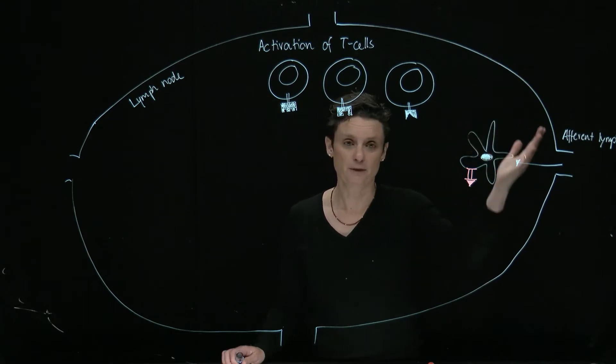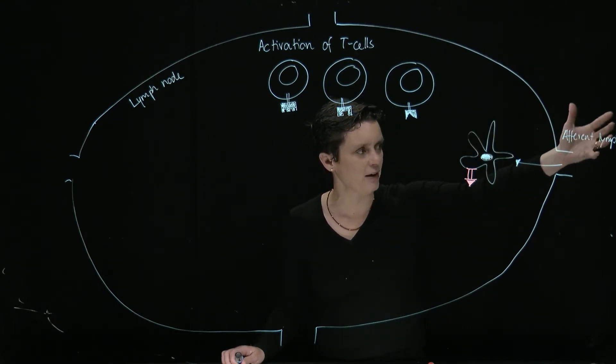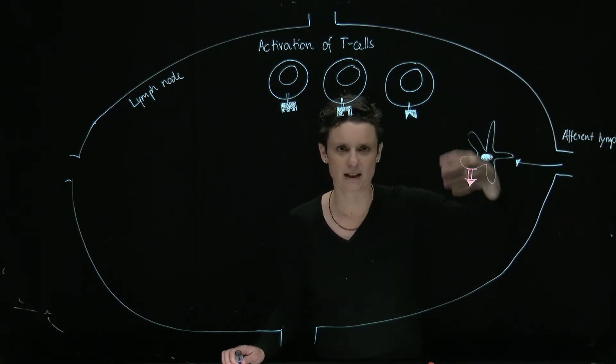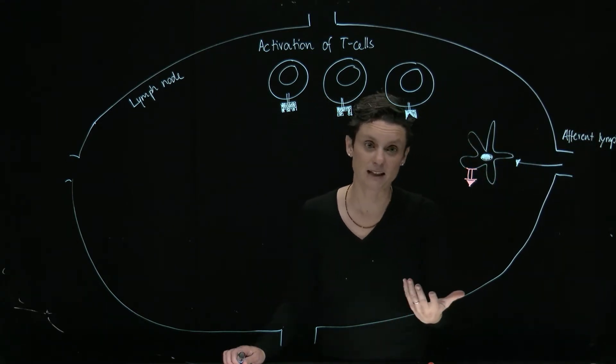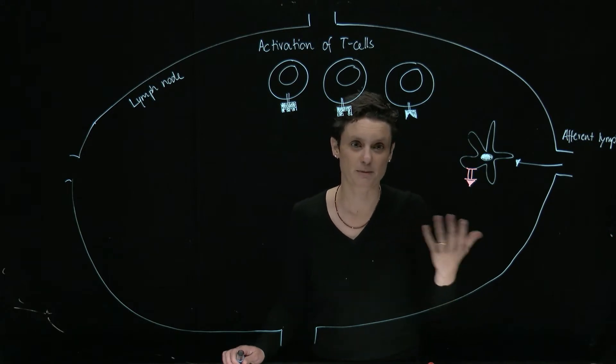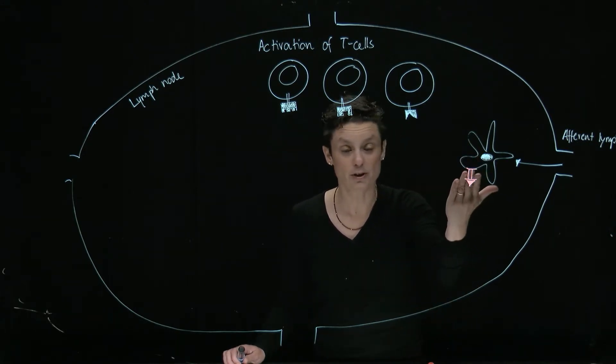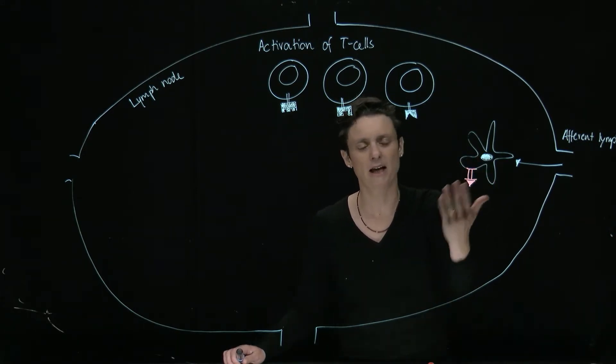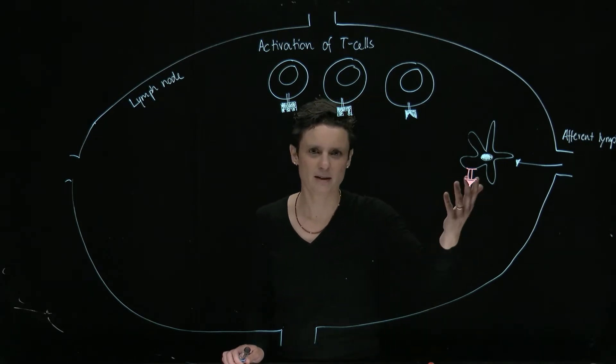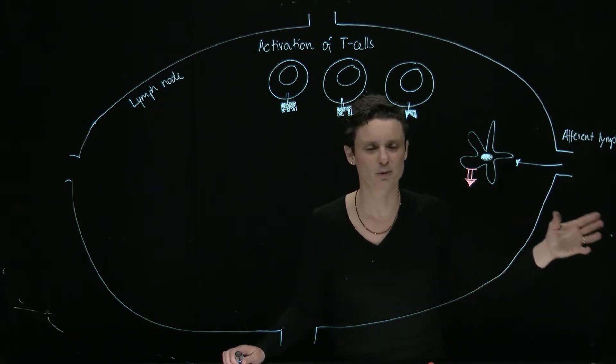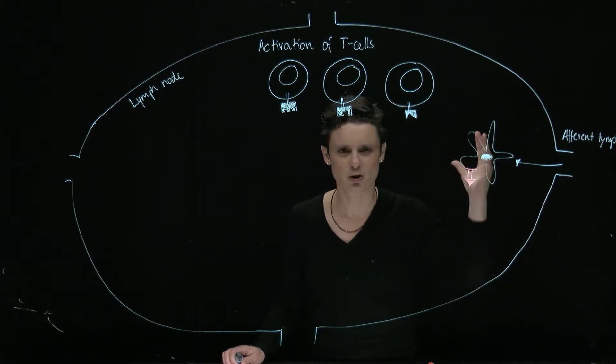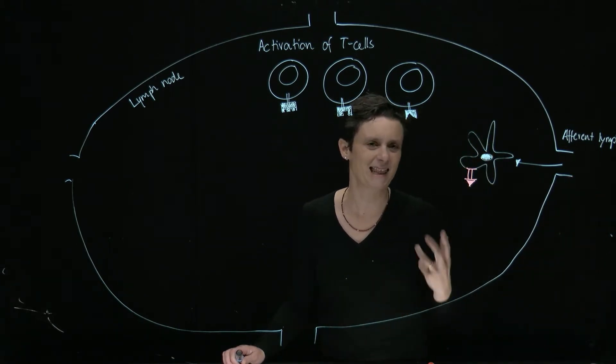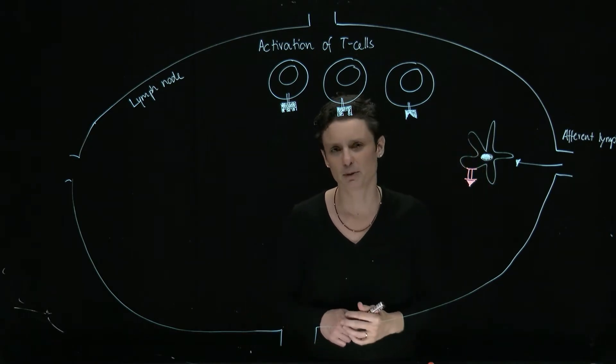So I've drawn here a lymph node and here's the afferent lymphatic vessel draining here the lymph node. And so here is a dendritic cell that we have seen in the previous video that ate up stuff from this bacteria and shows it proudly presenting it on MHC class 2. You can think about a dendritic cell being a news reporter that takes a snapshot from the site of infection and then travels to the lymph node and there is going to present what it has eaten, what it has found and will try to get help.